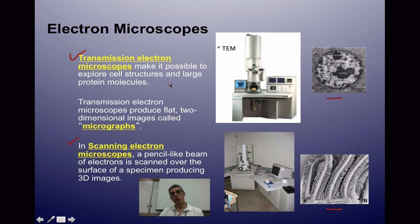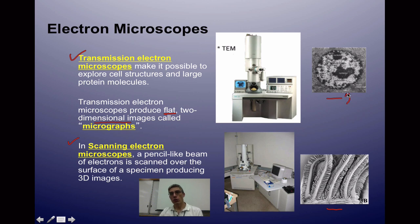The image from an electron microscope is most likely viewed on a computer screen. A TEM produces a flat, two-dimensional image — these images are often called micrographs. A scanning electron microscope scans the surface of the specimen, so you see the outside rather than the interior, and it produces a 3D image of the specimen. Both are large microscopes, but they give us a great deal of detail about what we're looking at.